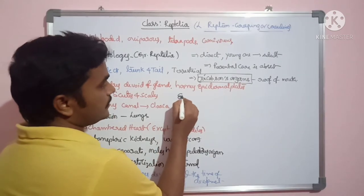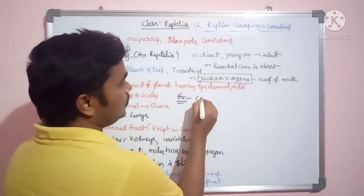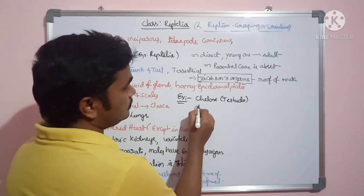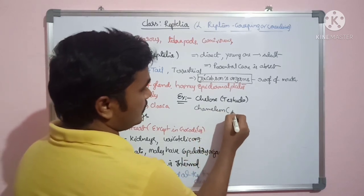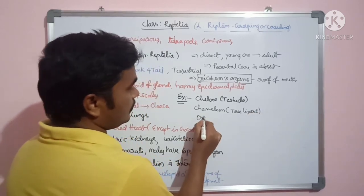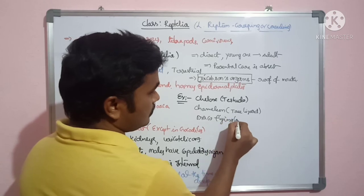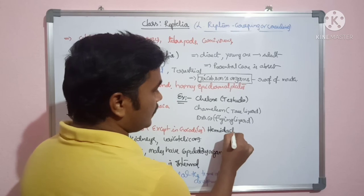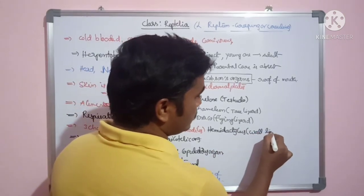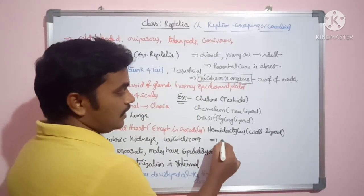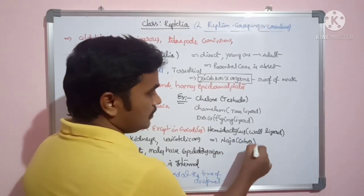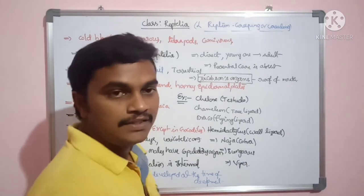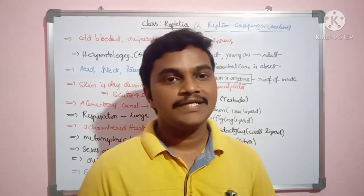Examples of Reptilia include: Chelone and Testudo (turtles), Chameleon (tree lizard), Draco (flying lizard), Hemidactylus (house gecko), Naja (cobra), Bungarus (krait), and Viper. These are some examples of reptilian organisms. Thank you for watching; please subscribe to my channel.